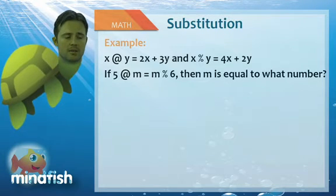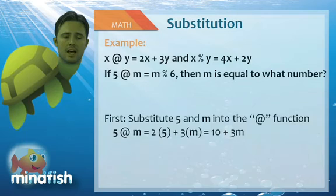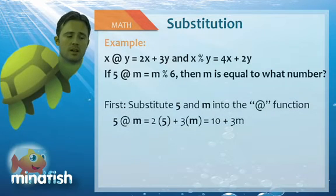If I say 5 at m equals m percent 6, then m is equal to what? So here you're thinking, I've got two equations. How do I do this? Just do them one at a time. 5 at m, we're going to replace x with 5, y with m to yield 10 plus 3m.